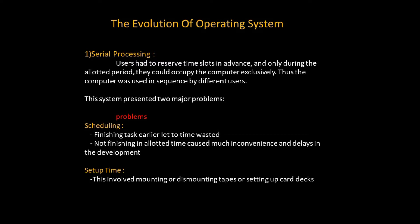This system posed a lot of problems in two major ways. The first was in the form of scheduling. Finishing tasks early led to time being wasted, because since users were allotted time, some users' work was so small that they finished before time and the rest of the time was wasted. Another problem was not finishing in the allotted time, causing much inconvenience and delay in development — when a user's program was too large to finish within the allocated time, perhaps due to errors or other problems, it caused delays.